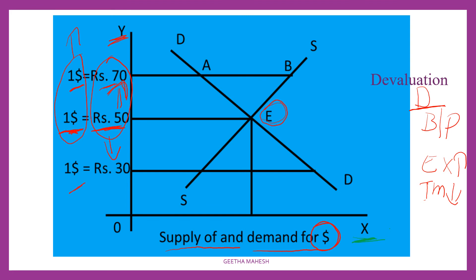What is devaluation? Devaluation is when the value of the domestic country's currency decreases in front of the value of the foreign country's currency. The value of the rupee decreases in front of the dollar. For example, if previously $1 was equal to ₹50, now $1 equals ₹70 — the rupee value has decreased. That is devaluation.